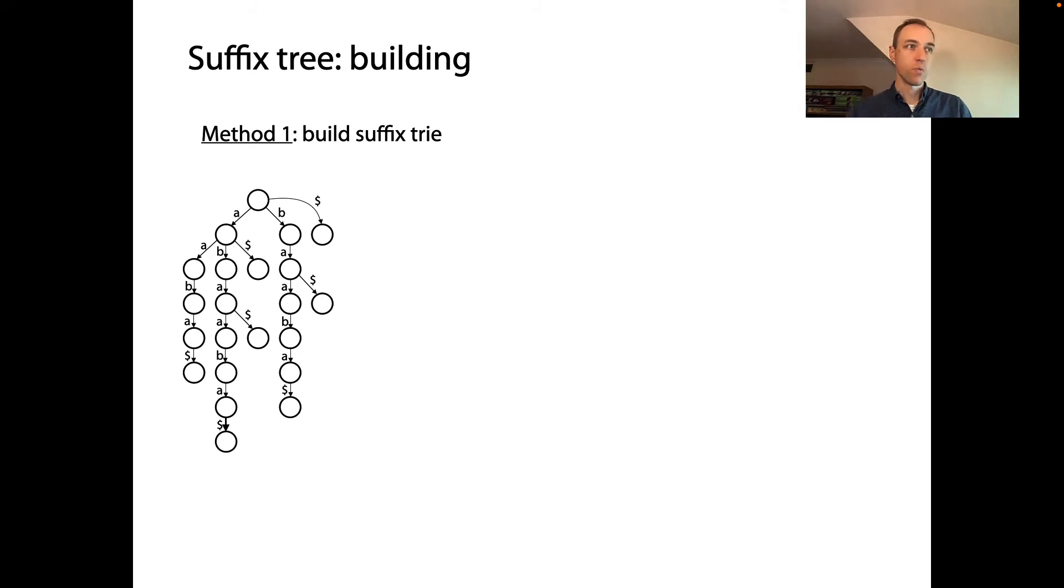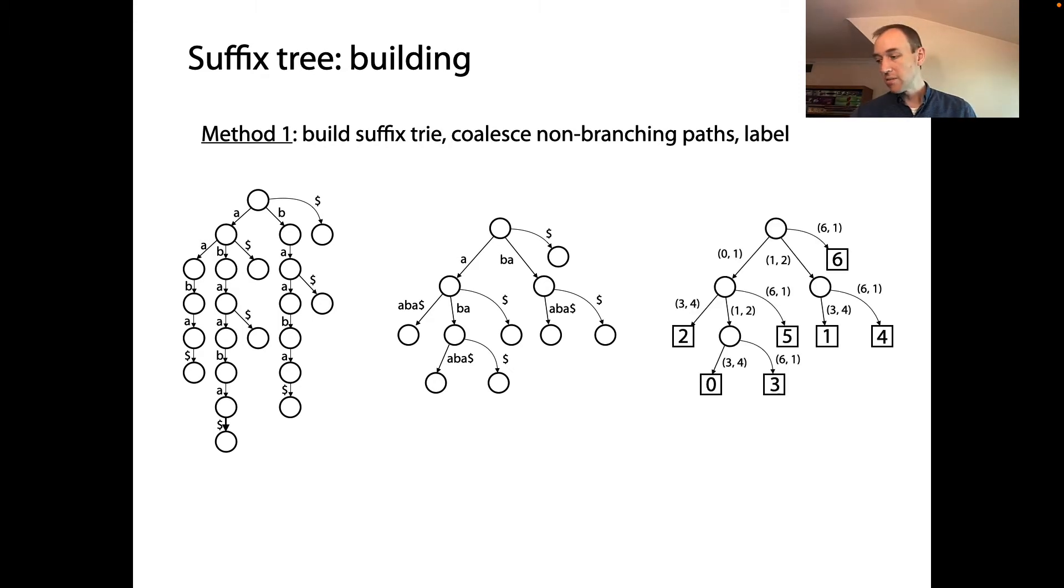So one way we could build the suffix tree would be to follow exactly this method where first we build the suffix trie. That's pretty obvious, right? We just iterate through the suffixes and then for each character of the suffix we add the appropriate new edge and node going down from the root. So we could do that first, build the suffix trie, then coalesce the non-branching paths to achieve O(M) number of nodes, and then replace the edge labels and leaf labels with what we need them to be. In other words, start from the big trie data structure and work our way to the smaller final tree data structure.